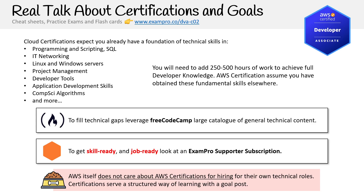If you want to get a job as a developer or DevOps person, you need a certain amount of hours put in for developer knowledge — 250 to 500 hours — the same value I say for any of these specific roles. Just understand that you need a lot of hours beyond the 20 or so hours you'll put into the certification.